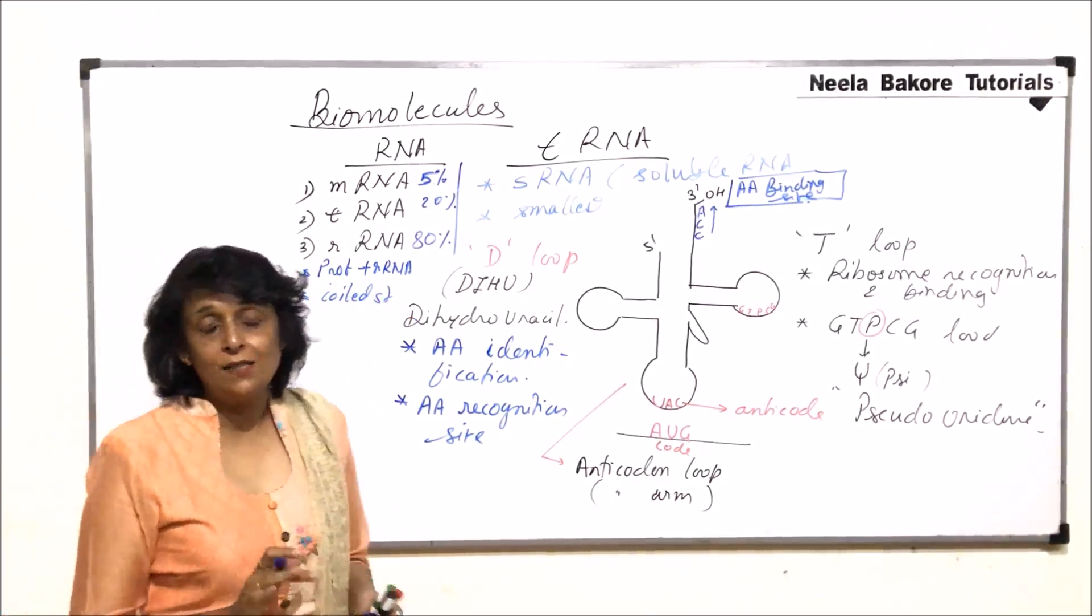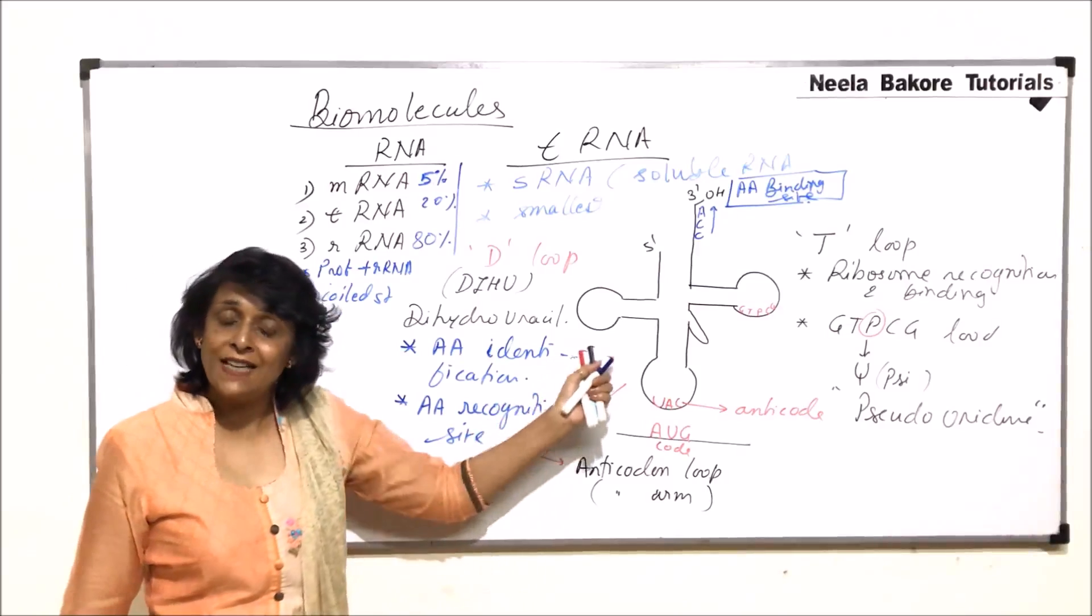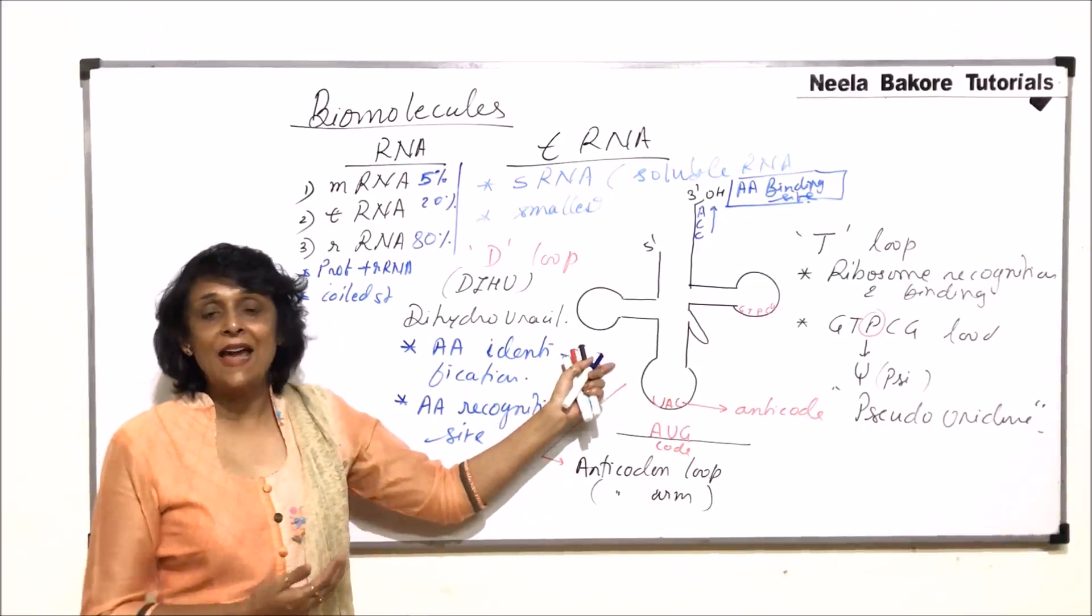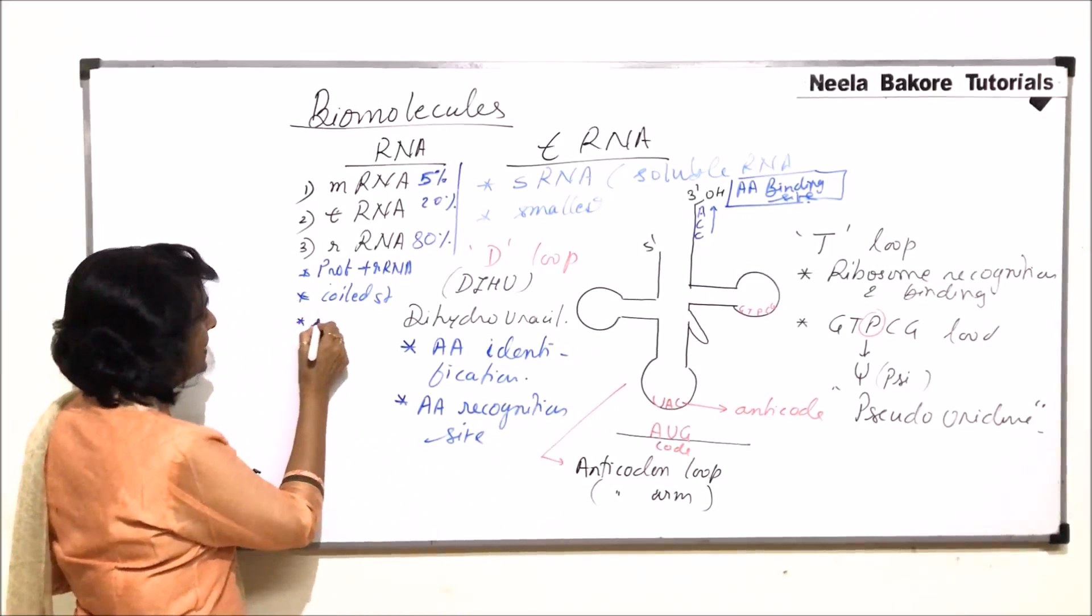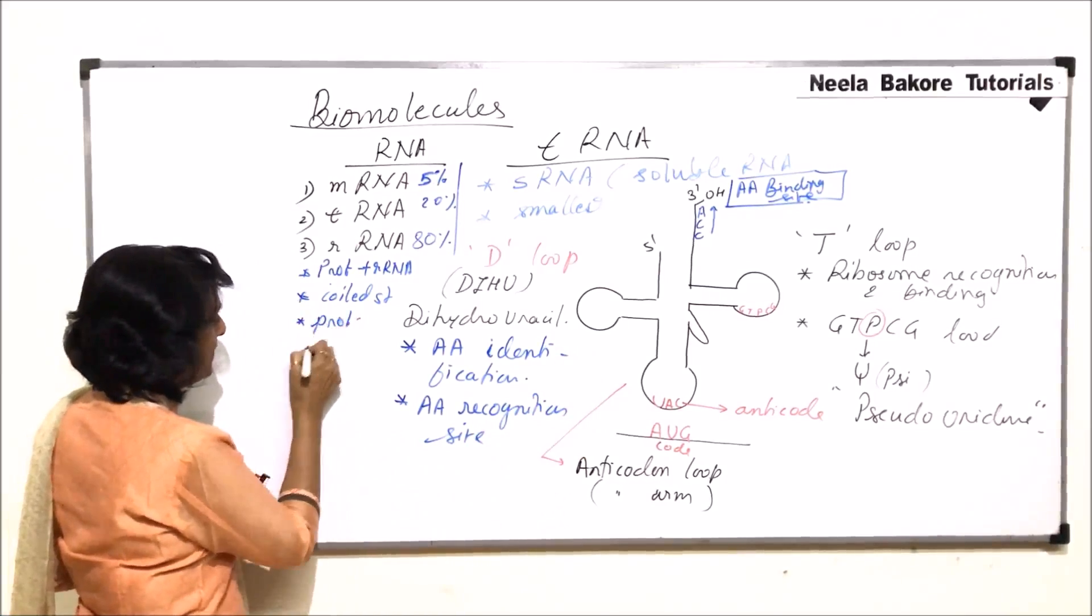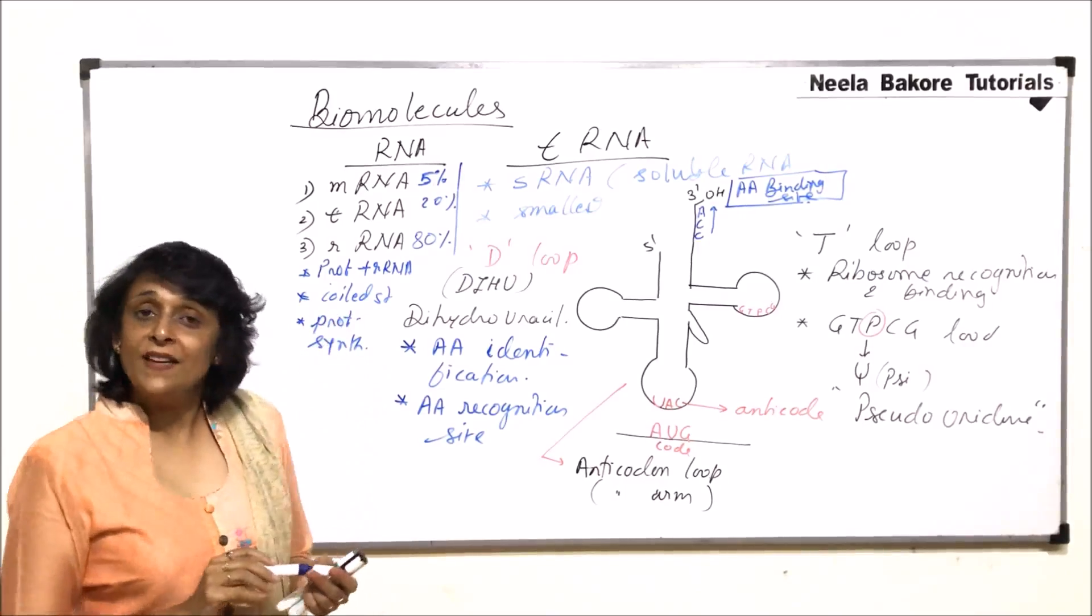We do not know the detailed structure as we do for mRNA or tRNA. So we do not have any diagram to be drawn. Function of ribosome RNA is protein synthesis. So we clearly know its function but not the structure.